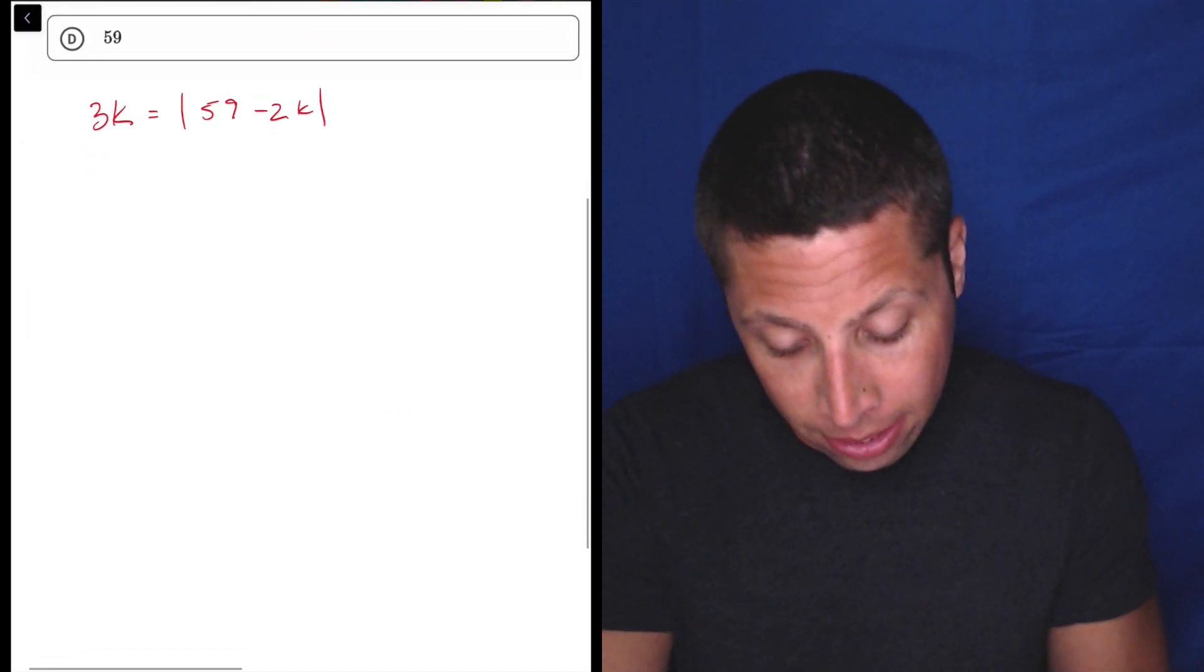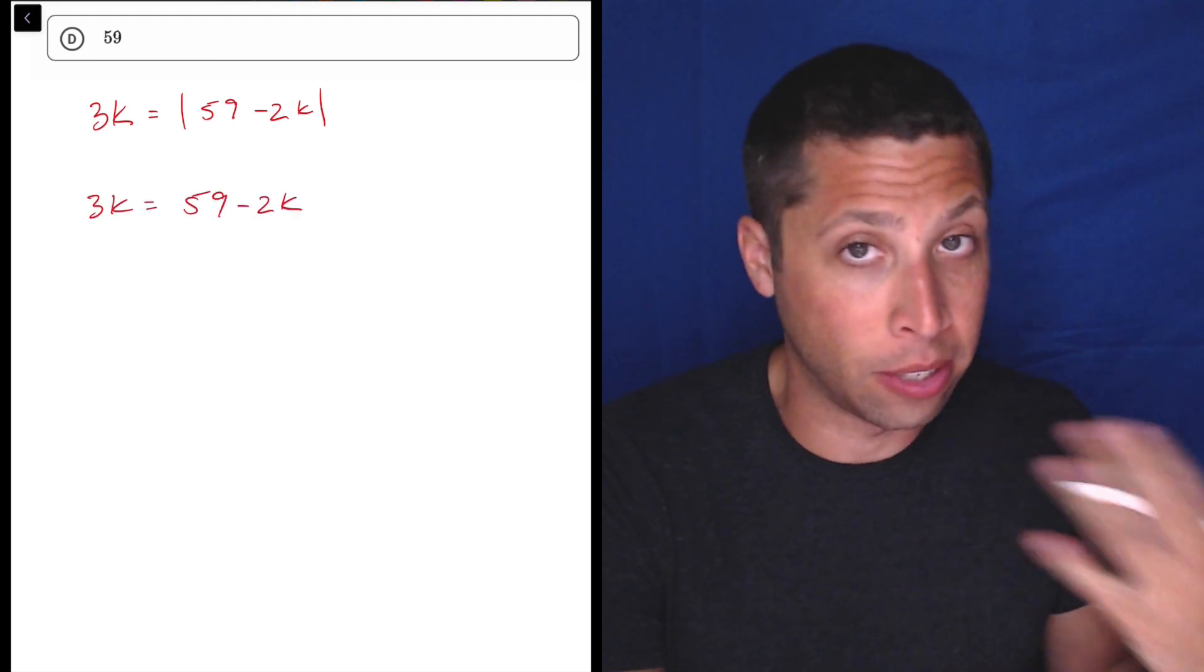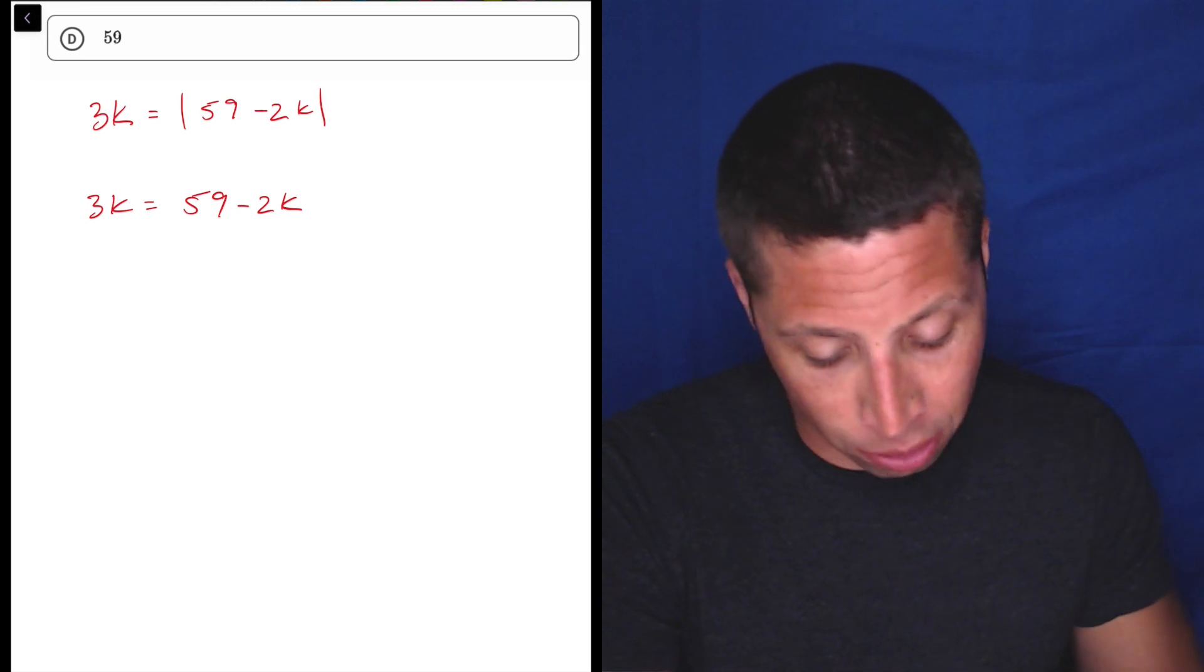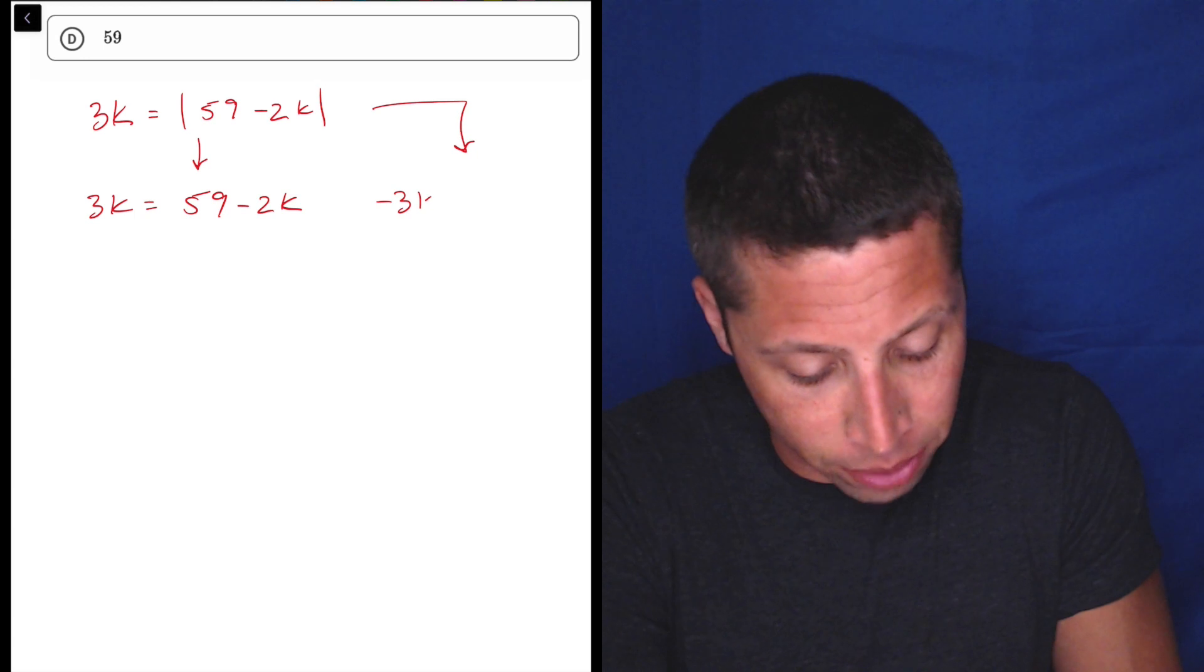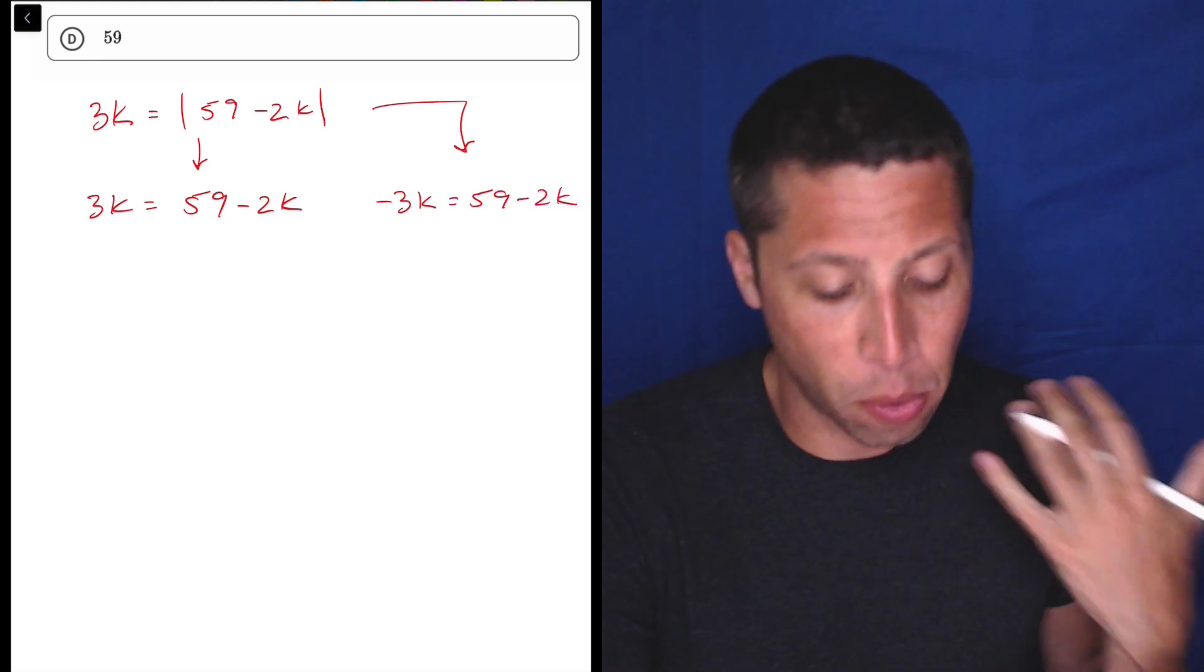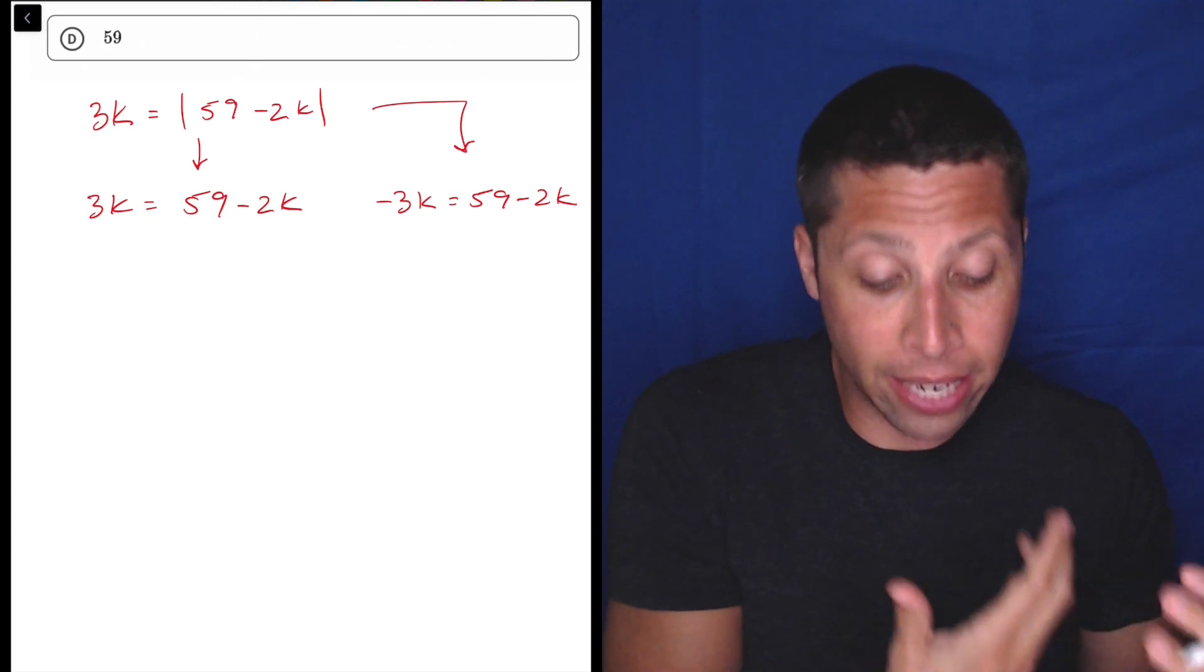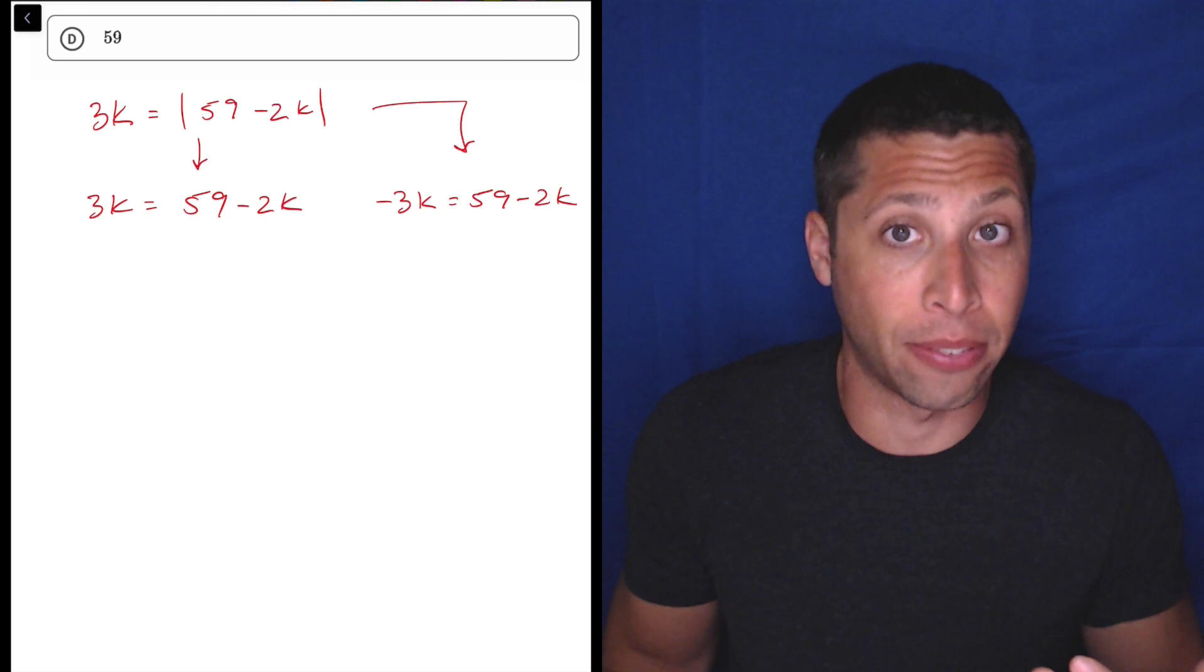So I would split this into two. One is going to be the more straightforward, just drop those absolute value bars, and it's gone. And I can do that because there's nothing else on that right side. If there's other stuff, I've got to move it over first. But here, that's one version of the equation. The other version is to just do the same thing, but it's negative. So negative 3K is equal to 59 minus 2K. And remember why that works is absolute value will take whatever's in those special parentheses and make them positive. So if negative 3K were in those parentheses, it would have become the positive 3K that we see on that left side of the equation.